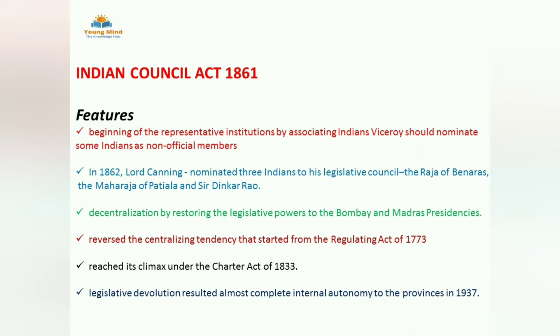As stated before, at the time of the Regulating Act we saw centralization. Now in 1861, decentralization started — by restoring legislative power to Bombay and Madras Presidencies, which had previously been given to the Governor of Bengal. In 1773 centralization had started — single power controlling all territories. Now the reverse began: all territories getting back their power. Centralization that started in 1773 came to an end under the Charter Act of 1833 when legislative devolution started, and provinces began to get more power.